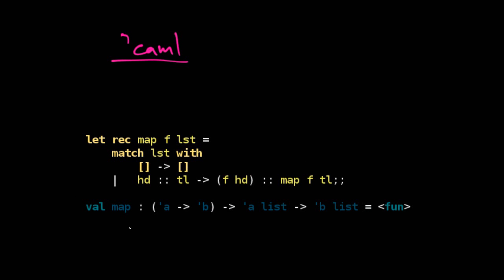This here is an example of a function written in OCaml. And so this function defines map. So this is the function that's defined. And here F and list are the parameters.